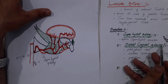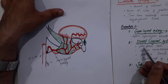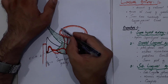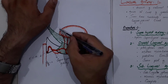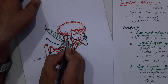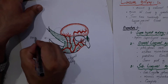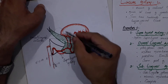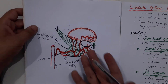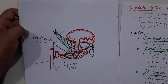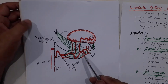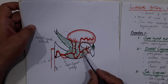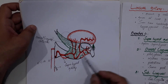Moving further forward, we see two branches going towards the dorsal part of the tongue — these are the dorsal lingual arteries. They supply blood to the palatoglossus arch, and here we also have the palatine tonsils on both sides. Then moving further forward there is the sublingual artery — 'sub' means below, so it runs below the tongue.